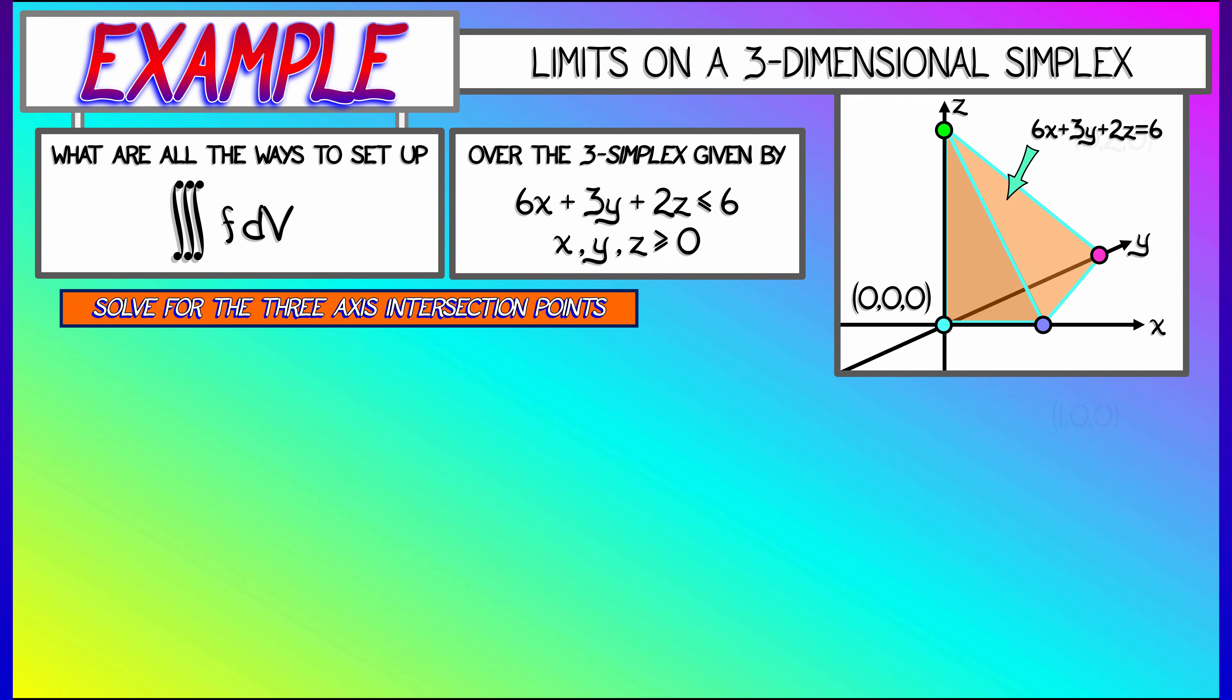...setting y and z equal to zero and solving for x equals 1. If we do that with the other axes, then we see where those intersection points are. We use what we know about those two inequalities to conclude that we get this tetrahedral shape, this shape that is formally called a 3-simplex.